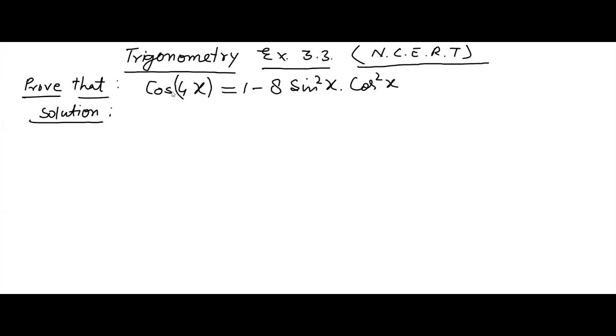Our question is this: we have to prove cos 4x is equal to 1 minus 8 sin²x into cos²x. For proving this, we should take LHS, left hand side.